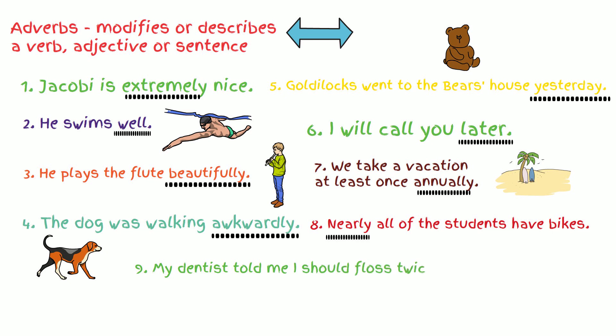Number nine. My dentist told me I should floss twice daily. How often should he floss? Floss is a verb. Twice daily. Daily is the adverb. And the last one, number 10. I usually shop for groceries on Saturday mornings. He's shopping. That is a verb or an action. How often? Usually. Usually is the adverb.